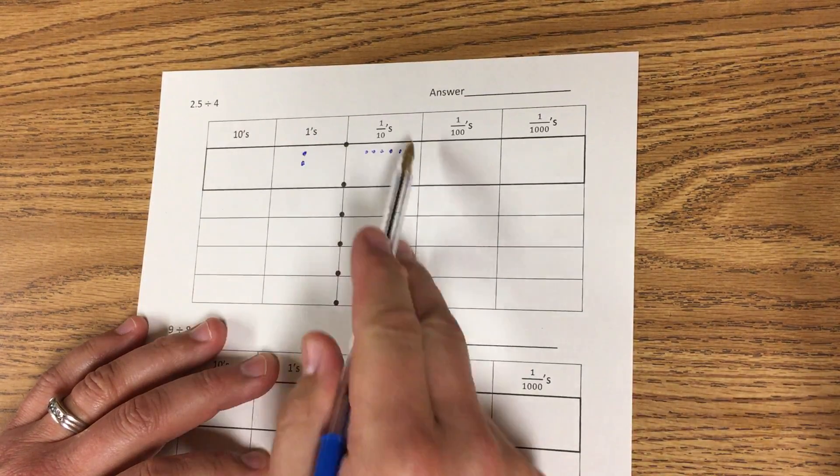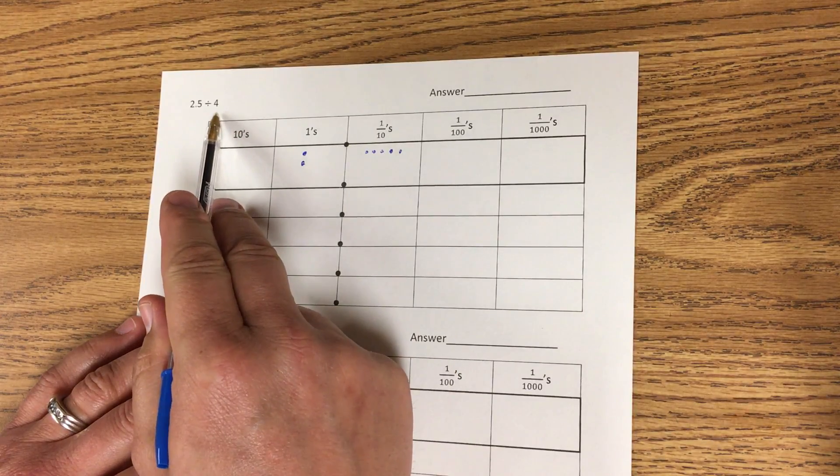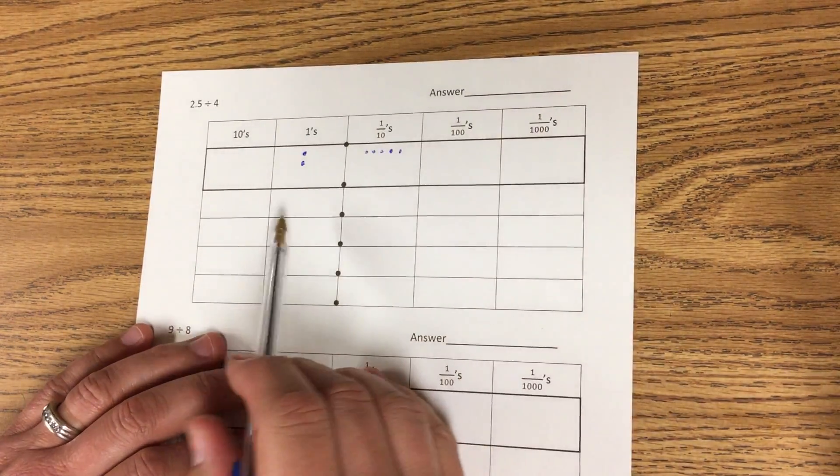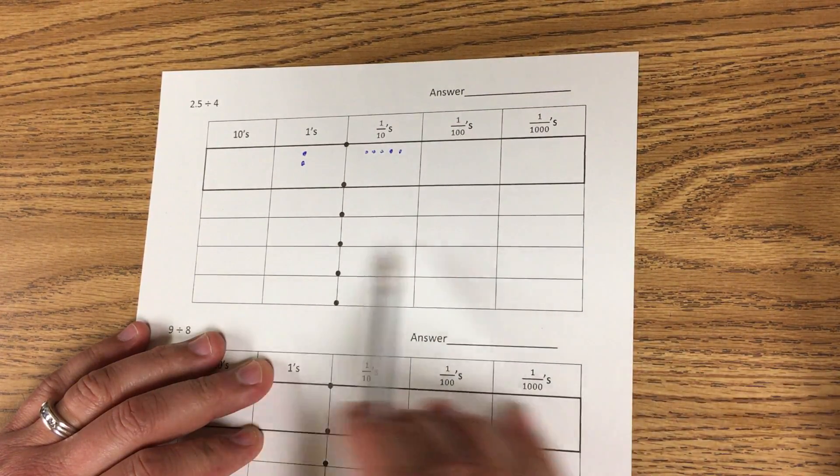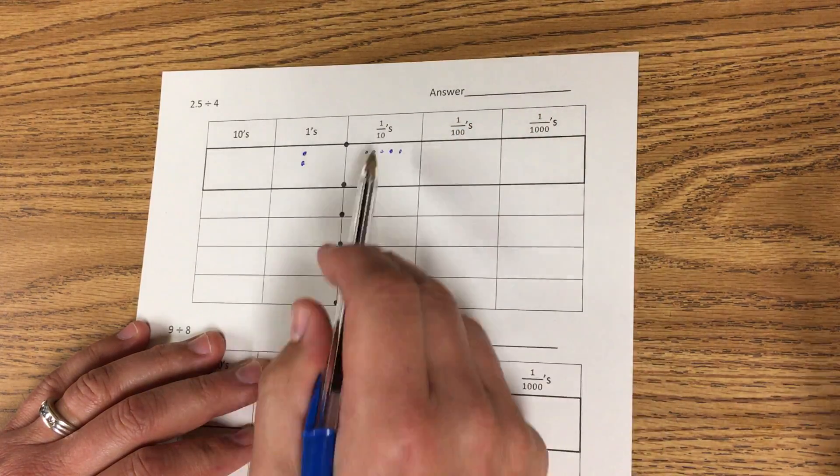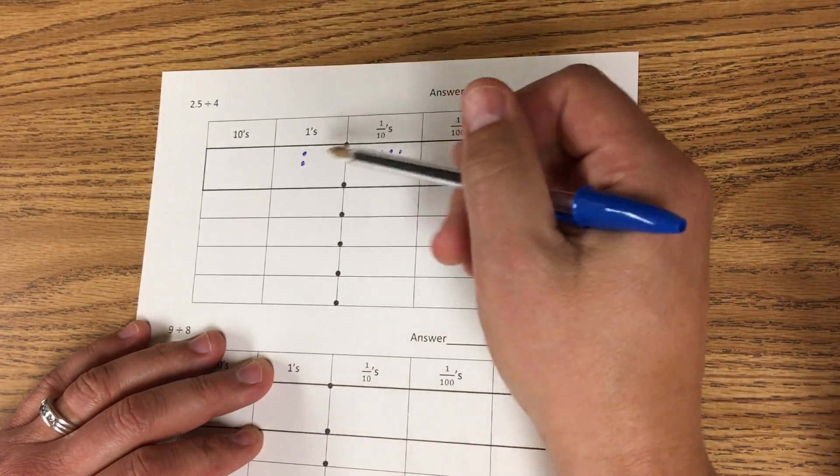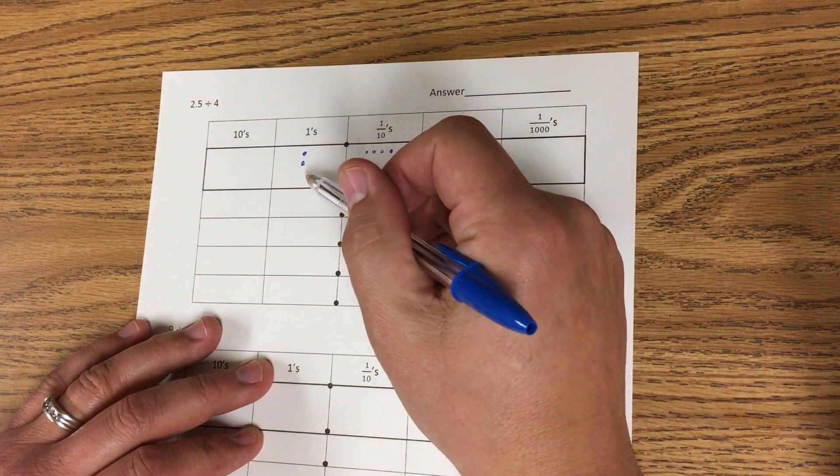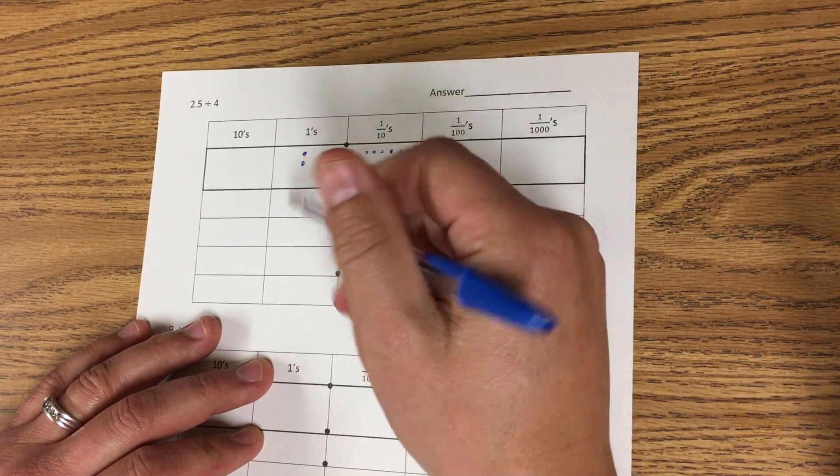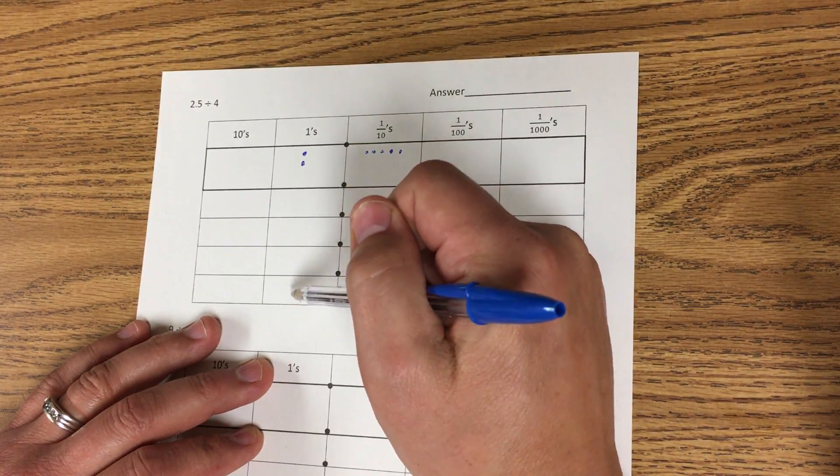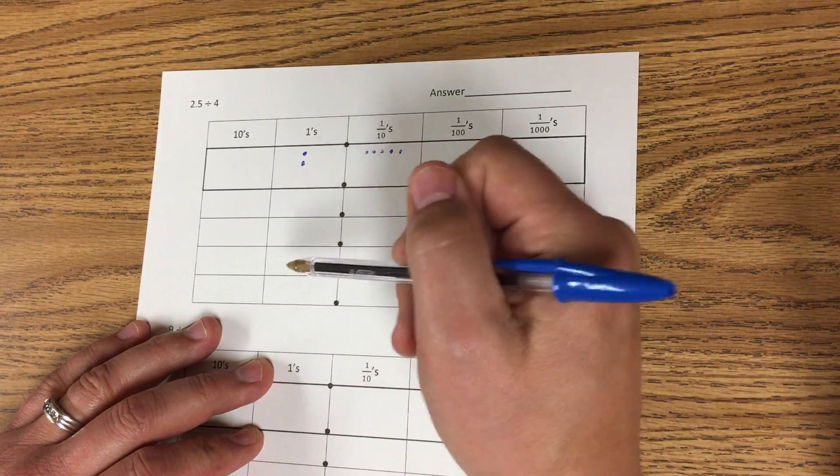I'm gonna divide this quantity by 4. So here I have 4 rows because I'm gonna distribute this amount evenly into these 4 rows. So first I'm looking at the ones and I only have two ones. So I cannot spread them out evenly in the ones place.